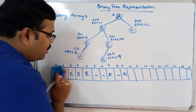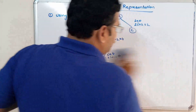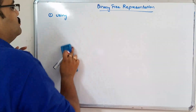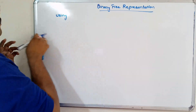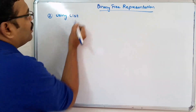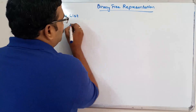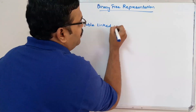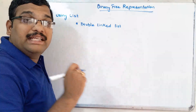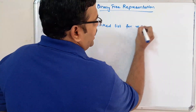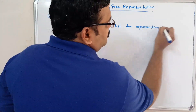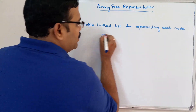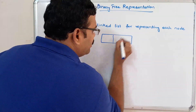Now we will go with the second representation — the list representation. Here we will use a doubly linked list for representing each node of the binary tree. A doubly linked list node has three fields.